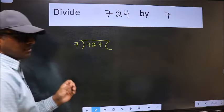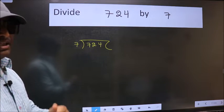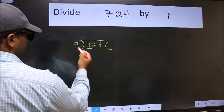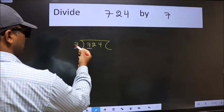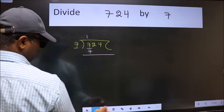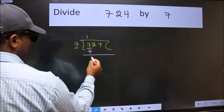This is your step 1. Next, here we have 7 and 7 here. When do we get 7 in the 7 table? 7 once 7. Now we should subtract. We get 0.